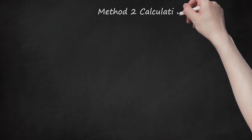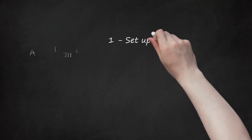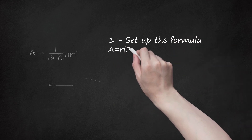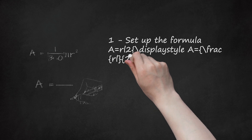Method 2: Calculating the Area with a Known Arc Length and Radius. Step 1: Set up the formula A = RL/2. In the formula, R equals the length of the radius, and L equals the length of the arc. Remember the formula for finding the circumference (perimeter) of a circle is 2πr. If you know the length of the arc, which is a portion of the circumference, you can find what fraction of the circle the sector represents by comparing the arc length to the total circumference.